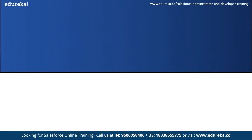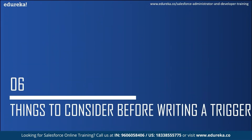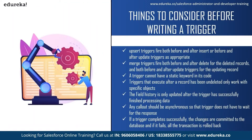Now let us look at the things to consider before implementing a Salesforce trigger. First, upsert triggers can fire both before and after insert, or before and after update as appropriate. Next, merge triggers can fire both before and after delete for deleted records, and before and after update for updating records. Also, a trigger cannot have a static keyword in its code. Triggers that execute after a record is undeleted only work for specific objects. Field history is only updated after the trigger has successfully finished processing. Any callout should be asynchronous so the trigger does not wait for a response. Finally, if a trigger completes successfully the changes are committed to the database; if it fails, the entire transaction is rolled back.